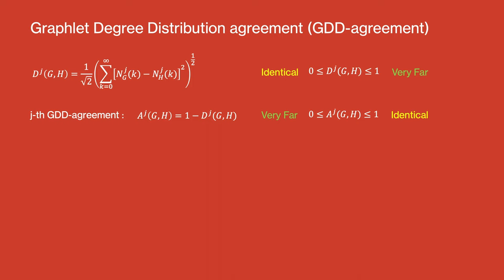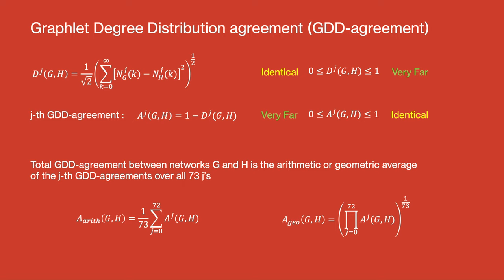The interpretation of 0 and 1 is reversed by taking a quantity A_j which is 1 minus d_j. Now, 0 becomes very far and 1 becomes identical. The total GDD agreement between networks G and H is expressed as the arithmetic or geometric average of the jth GDD agreements over all 73 j's.